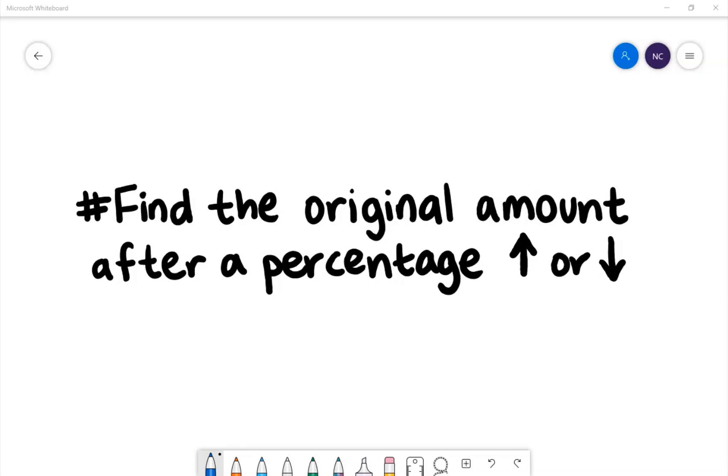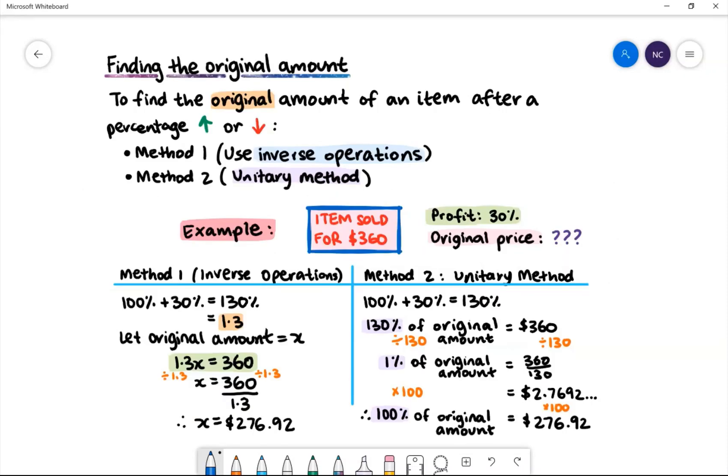Hi there, today we are going to find the original amount after a percentage increase or decrease. To find the original amount of an item after a percentage increase or decrease, there are two common methods you can use.